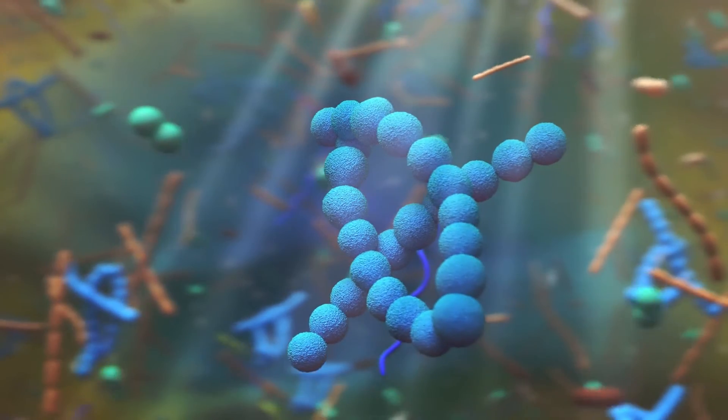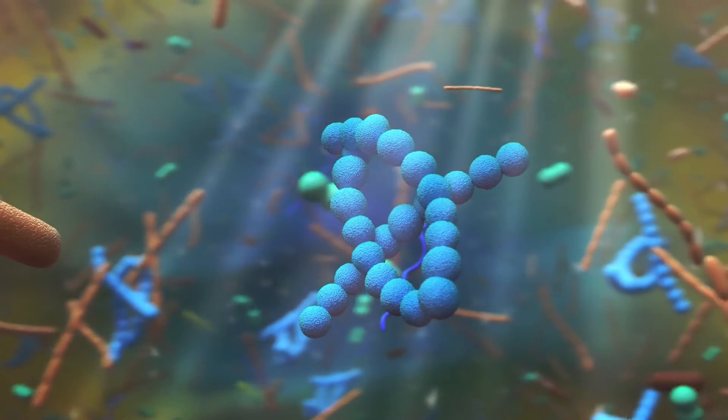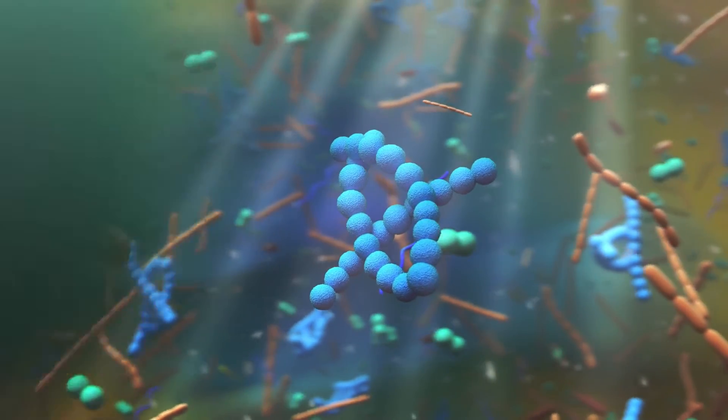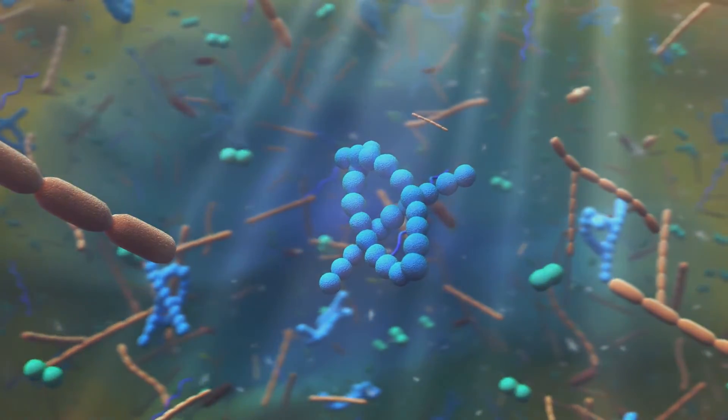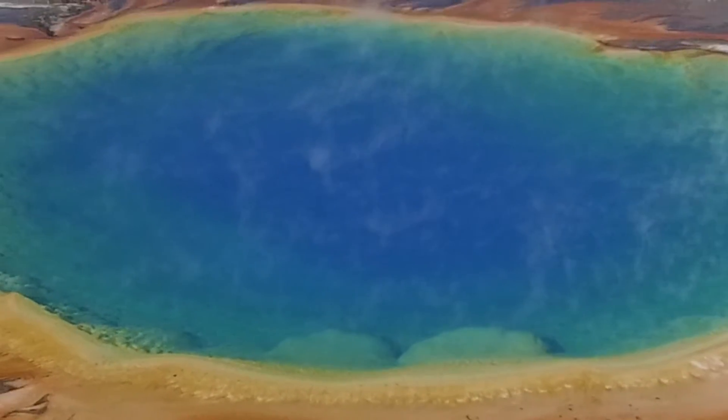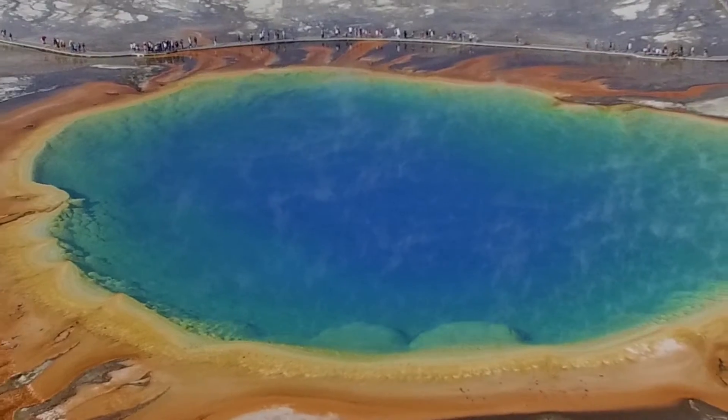CRISPR-Cas9 and Cas13 are just two examples of natural biological systems that scientists have modified to fight genetic and infectious disease. The question remains, what other tools are out there in the natural world, just waiting to be discovered?